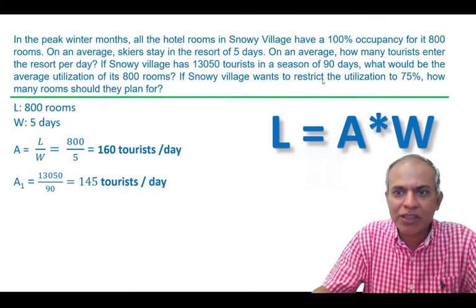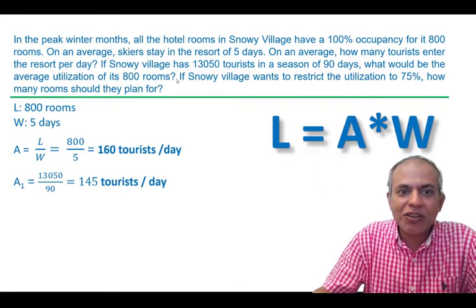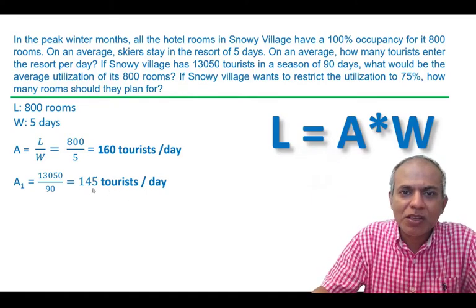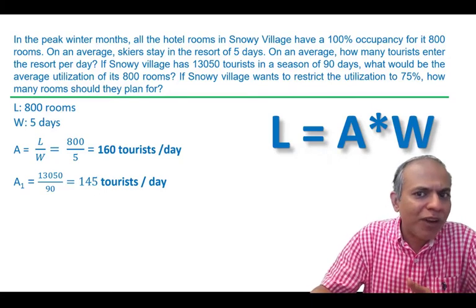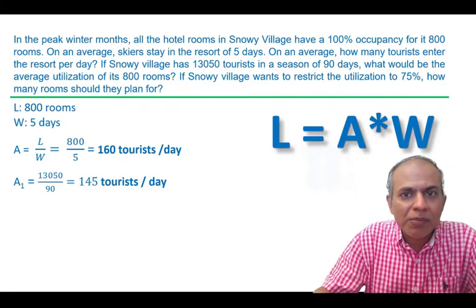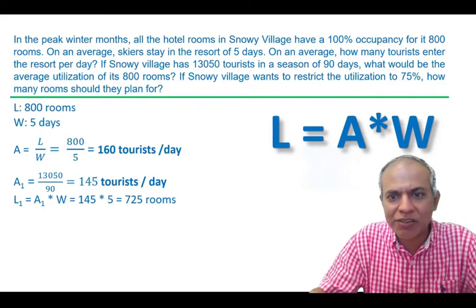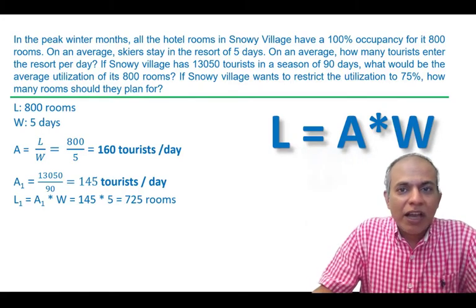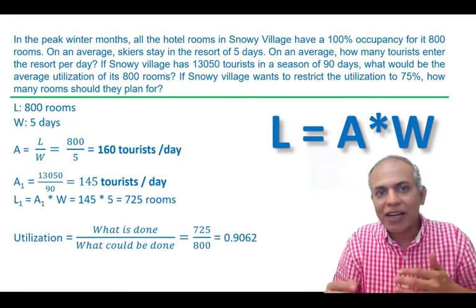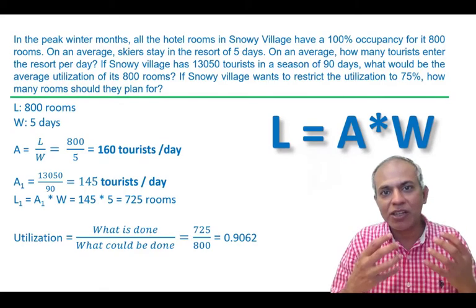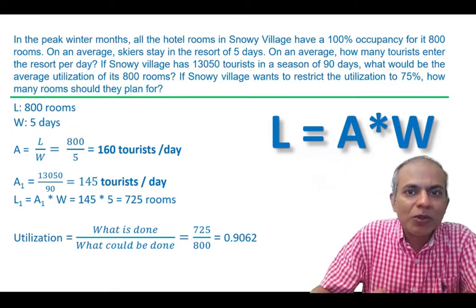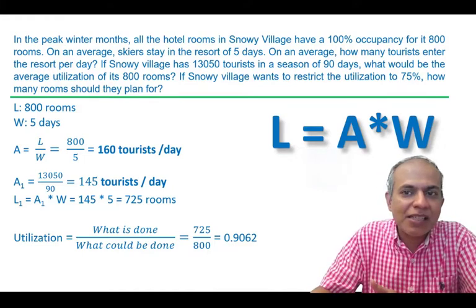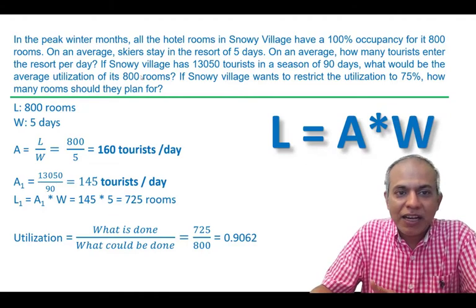Now, what would be the average utilization of the 800 rooms? With 145 tourists per day, I need to calculate the new actual L — how many of those 800 rooms are actually being utilized. Doing that calculation, Snowy Village ends up using 725 rooms. Utilization is simply what's actually done divided by the maximum capacity, which gives us 725 / 800 = 0.9062, or 90.62%.